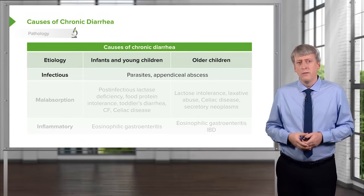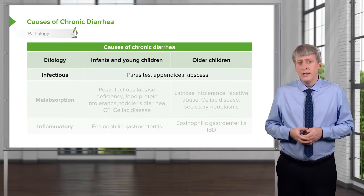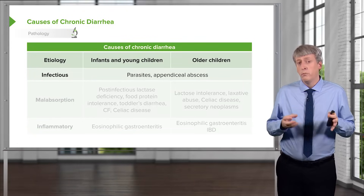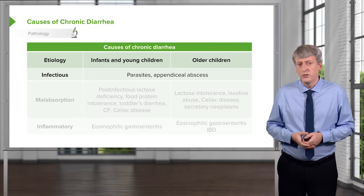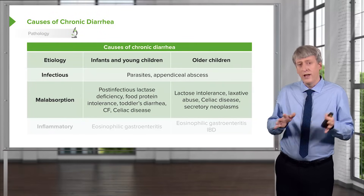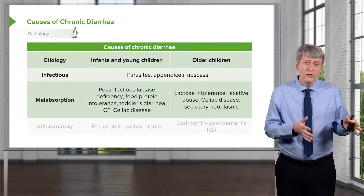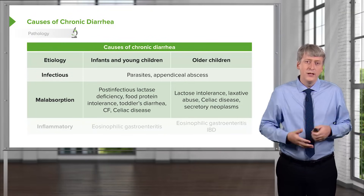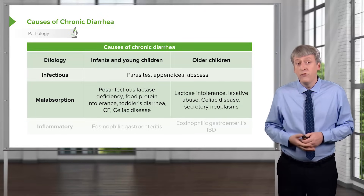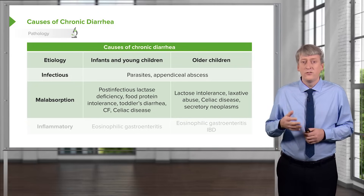Chronic diarrhea is much less common than acute diarrhea. Examples in both infants and older children include parasites and abscesses around the appendix. Patients may have malabsorption problems causing osmotic diarrhea. Examples would be post-infectious: after their diarrhea, children can lose the lactase in their intestinal wall and be transiently lactose intolerant. Patients can have food protein intolerance or allergy, cystic fibrosis, celiac disease, or toddler's diarrhea.